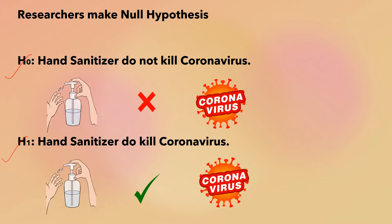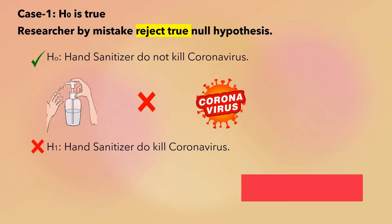Now Case 1 is when H₀ is true — that means the null hypothesis is true. If the researcher accepts the true null hypothesis, in that case the researcher has made the correct decision. There is no error.